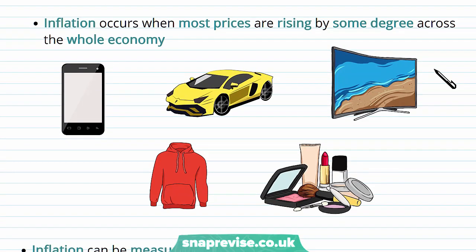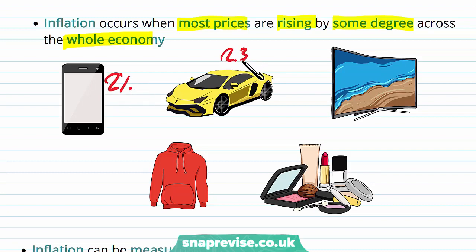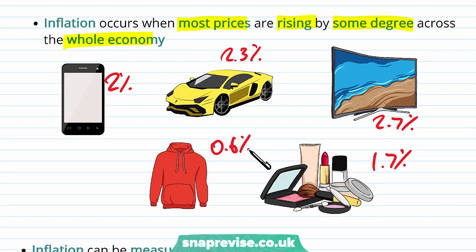Inflation occurs when most prices are rising by some degree across the whole economy. We'll see mobile phones increase by 2%, cars by 2.3%, TVs by 2.7%, makeup by 1.7%, clothing by 0.6%. If we see this, then there is potential for inflation to be occurring. These numbers illustrate an increase in the general price level across the economy, not just the price of one product.